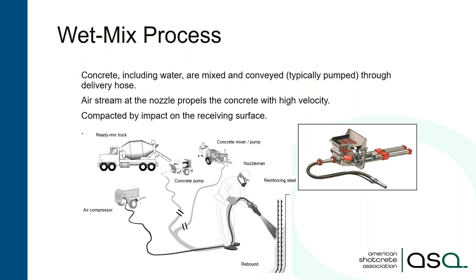In the dry mix process, the nozzleman adds the water at the nozzle, where it mixes with the material and is projected against the wall. It's called dry mix because the material conveyed through the hose is dry. The wet mix process uses complete ready-mix concrete — the water and all ingredients are already in the mix, and you pump the concrete through the hose to the nozzle. In the wet mix process, compressed air is added at the nozzle to propel the material against the wall, and you also potentially add accelerator there.